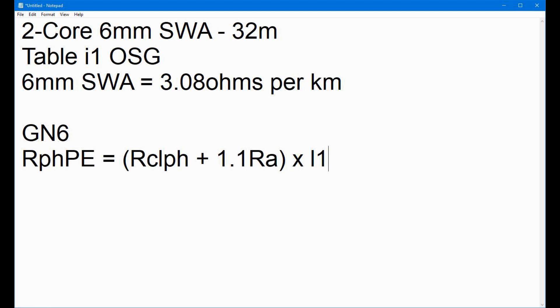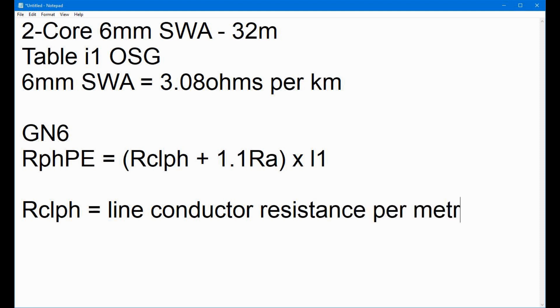The actual formula that you need to refer to is this one. So, RphPE equals (Rclph + 1.1Ra) x I1. That's L as in letter. We found that last bit. What does all that mean? That's a bit... It's double dutch, isn't it really? Well, let's go through each little bit here in turn, shall we? So, the Rclph value is the line conductor resistance per metre. Note, in this case, per metre, not per kilometre.